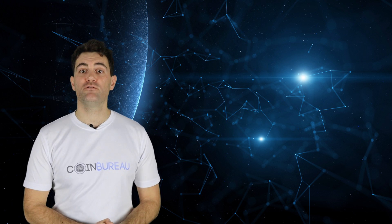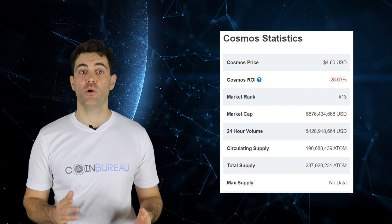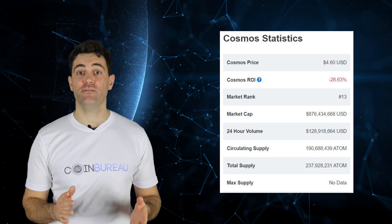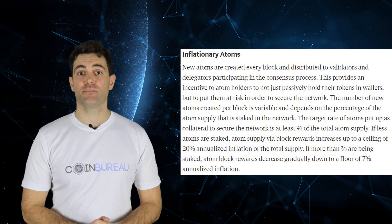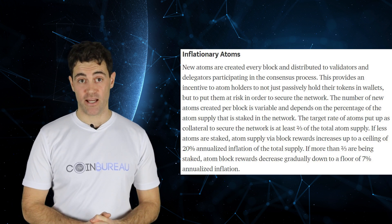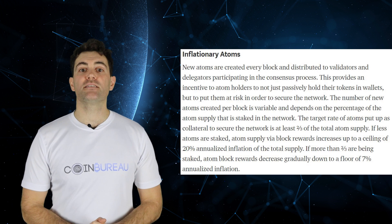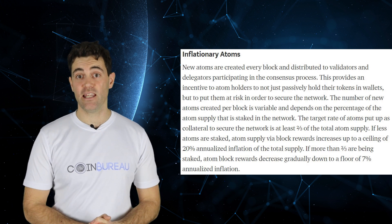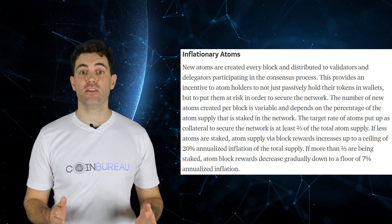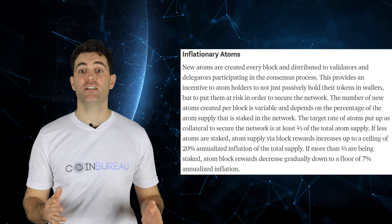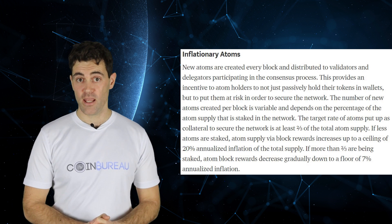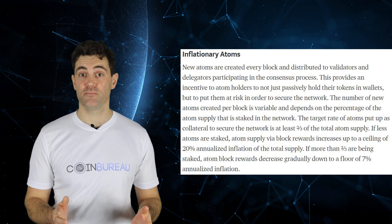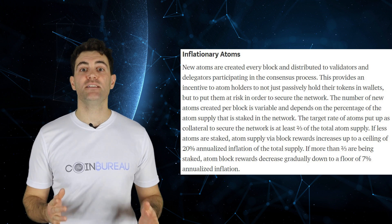There are currently more than 234 million atoms in total supply, with roughly 190 million in circulation. The protocol has dynamic inflation built in: the number of atoms created for block rewards depends on how many atoms are currently being staked. If less than two-thirds of supply is staked, the block reward increases up to an annualized inflation ceiling of 20%. Conversely, if staking exceeds that threshold, the inflation rate has a floor of 7%. This design provides an economic incentive for more nodes to stake, which makes the network more secure and decentralized.